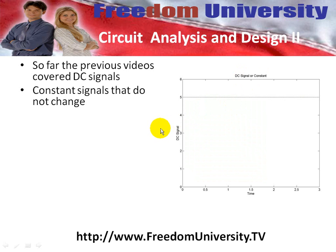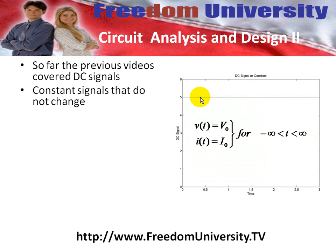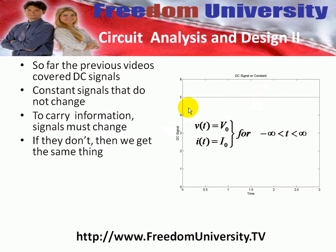Mathematically, this can be expressed where we have a constant voltage, such as a battery, or a constant current source, going from minus infinity to infinity for all time. Now we know that a battery doesn't last forever, but this just serves as a useful model. We're going to talk about signals that change if you want to carry information. If they don't change, then we get the same thing over and over. We're going to start off by introducing three basic time-varying signals.